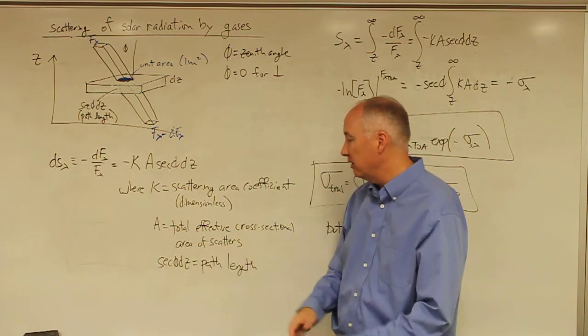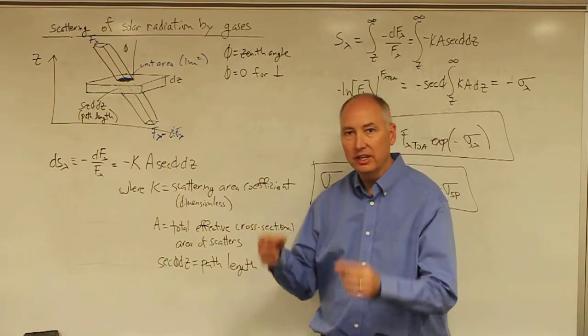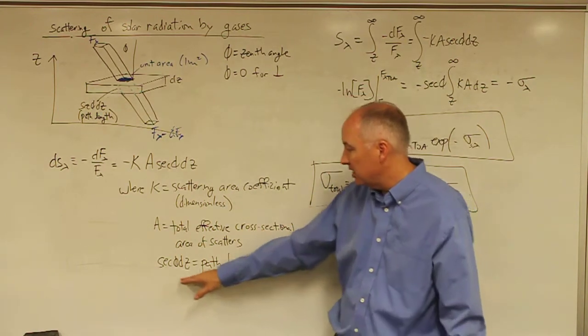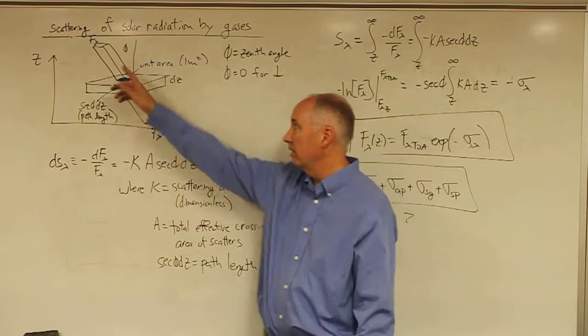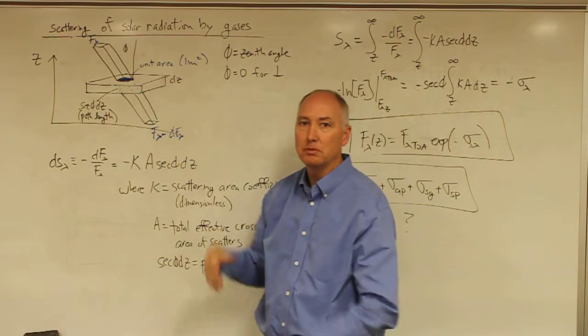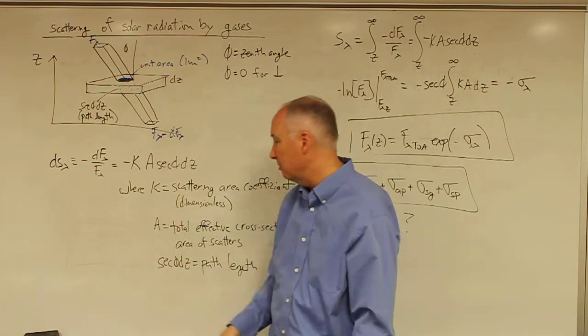And then A is the total effective cross-sectional area of all the scatterers in a given volume. And then secant phi dZ, of course, is our path length. So, the radiation comes in, it's scattered by gases or particles in this case, and it reduces the amount of radiation that's coming out the bottom.